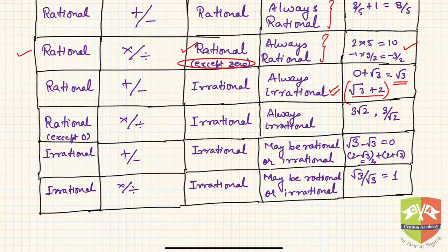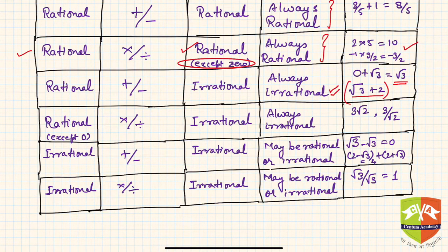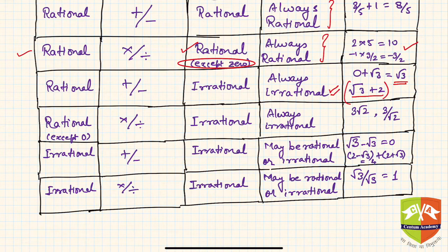Next, a rational number multiplied or divided by an irrational number — the rational number should not be 0, because 0 times anything gives 0, so except 0 — if you multiply or divide a rational number by an irrational number, you will always get an irrational number.